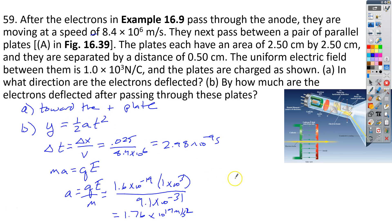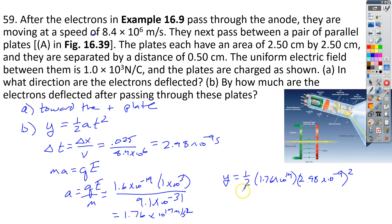Now we go back to the deflection equation: Y equals one-half times 1.76 times 10 to the 14th times (2.98 times 10 to the negative 9th) squared. We end up with 7.8 times 10 to the negative 4th meters, which is about 0.78 millimeters — almost a millimeter of deflection. And that is the end of number 59.